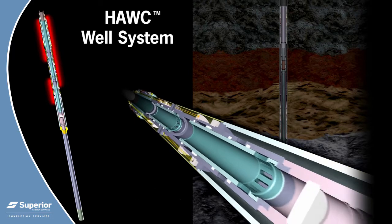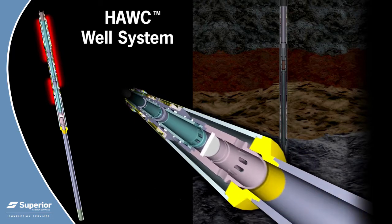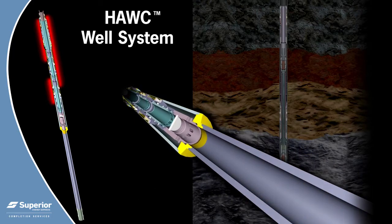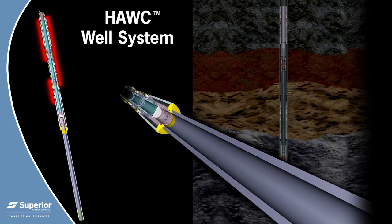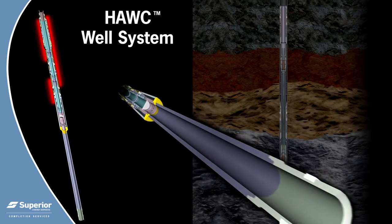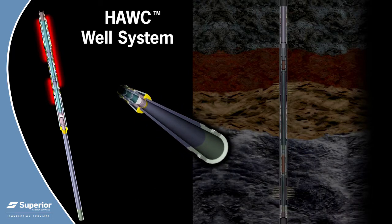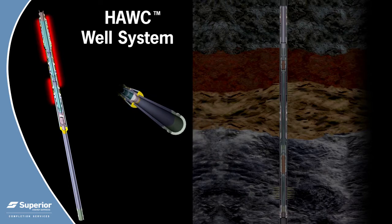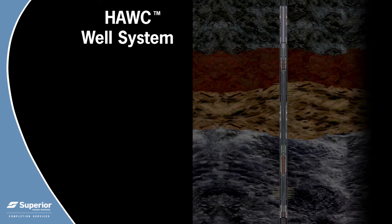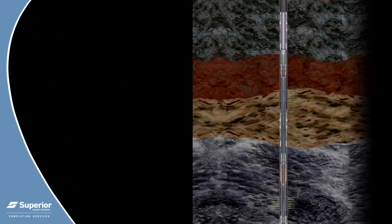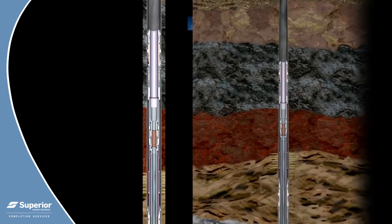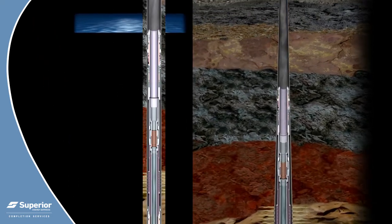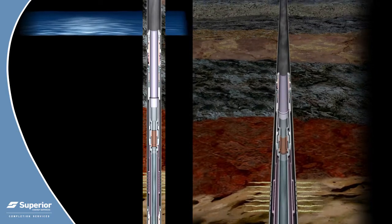These lines are accessible during run-in and the valves may be periodically cycled during installation to ensure good communication, valve operation, and that no damage has occurred to the control lines.